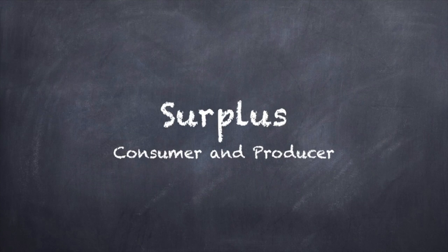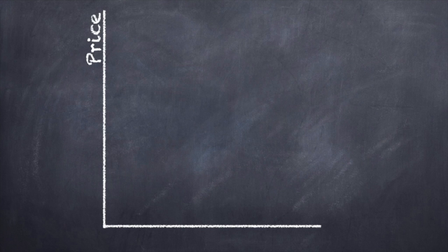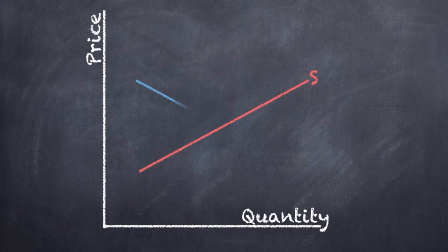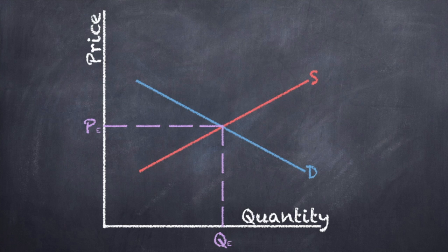Let's look at consumer and producer surplus on the basic supply and demand graph. You have your price, your quantity, your supply curve, your demand curve, and your equilibrium points. We're going to do a little math with those equilibrium points. You've probably noticed there's a lot of use of triangles with supply and demand curves — for example, deadweight loss requires calculating the area of a triangle. We're going to look at two more triangles today.